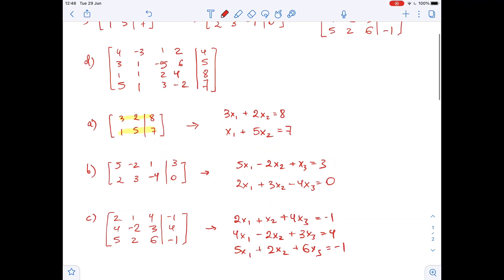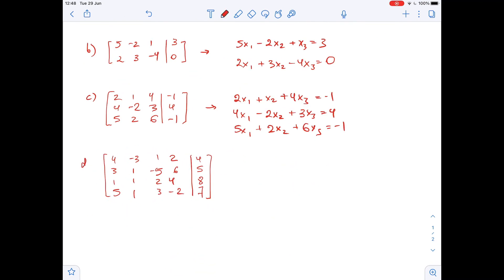And finally matrix d. Here we will have four equations and four variables, so matrix d we get 4x1 minus 3x2 plus x3 plus 2x4 equals 4, 3x1 plus x2 minus 5x3 plus 6x4 equals 5, x1 plus x2 plus 2x3 plus 4x4 equals 8, and 5x1 plus x2 plus 3x3 minus 2x4 equals 7.